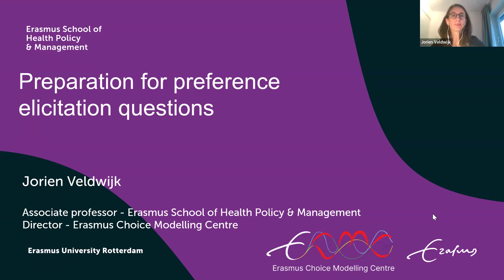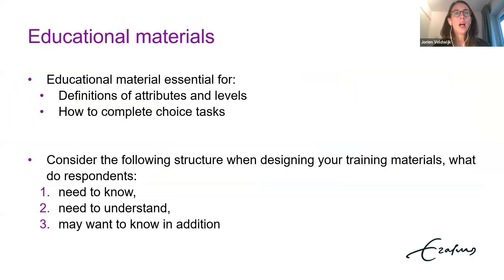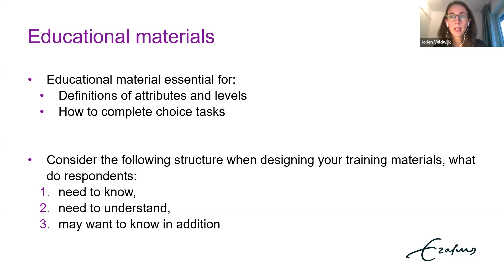Before respondents complete any preference solicitation task, they must be provided with training related to the content and meaning of all attributes and levels included in the study, as well as how to complete the choice questions in the survey. Such training is essential to ensure respondents understand all of this information and the tasks ahead of them, and it's assumed that this contributes to the validity of the preference study outcomes and results.